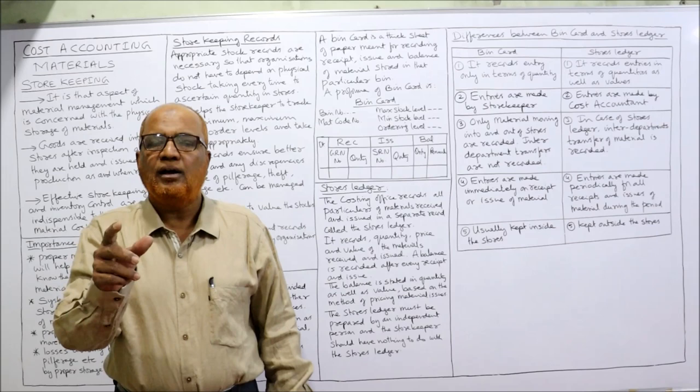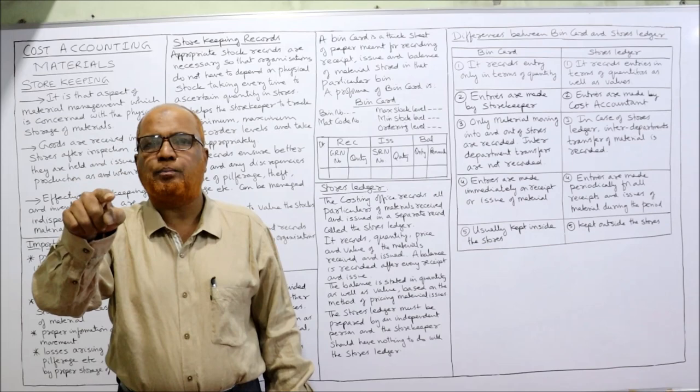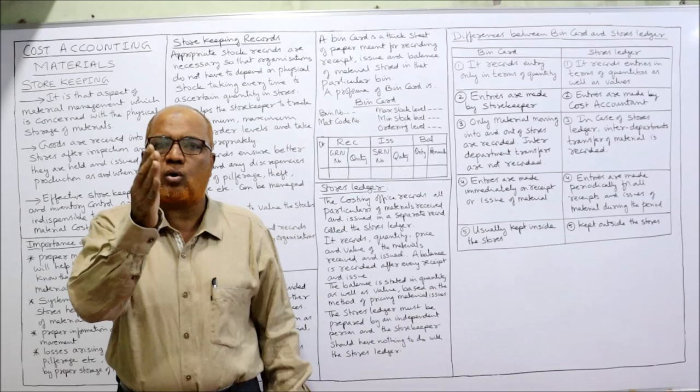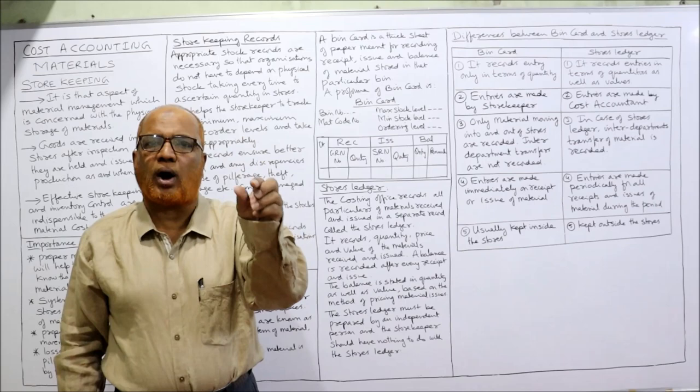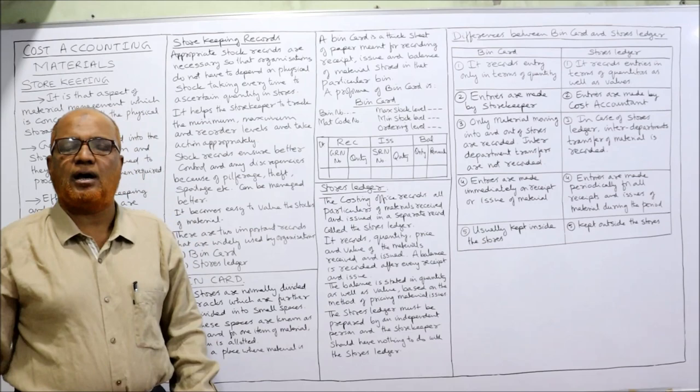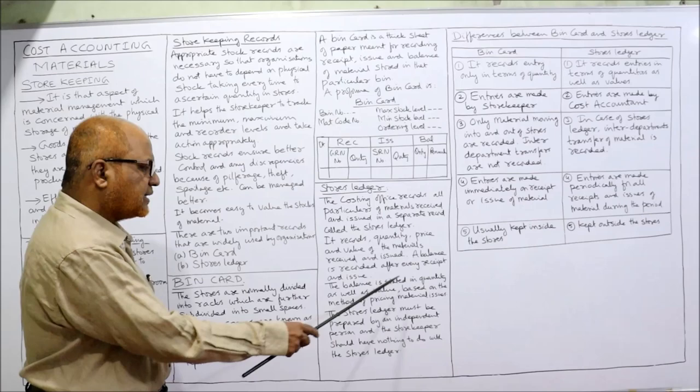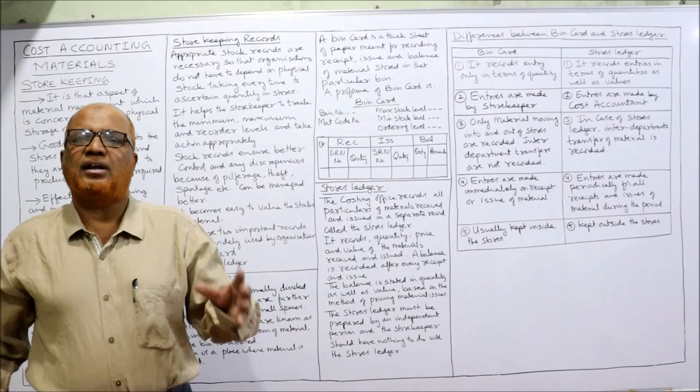Just like the bin card, the cost accountant maintains columns for receipts, issues, and balance — but with one extra item: price. The storekeeper is concerned only with quantity, but the cost accountant records quantity, price, and value. Every receipt has four columns: goods received note number, quantity, unit price, and amount. Similarly, issues have four columns: stores requisition note number, quantity, rate, and amount. The balance also includes quantity, rate, and value.